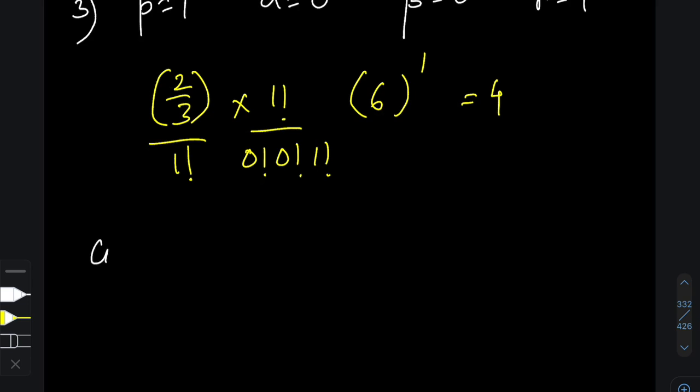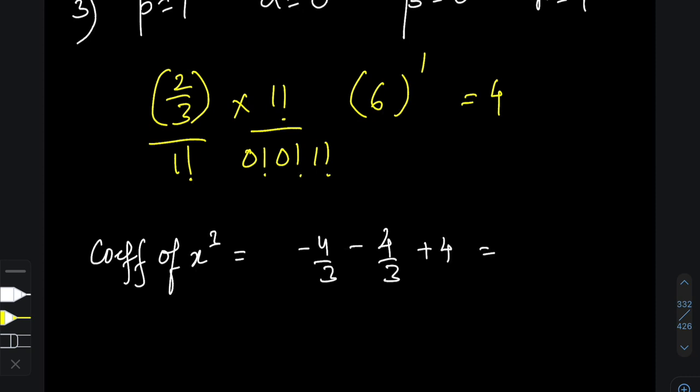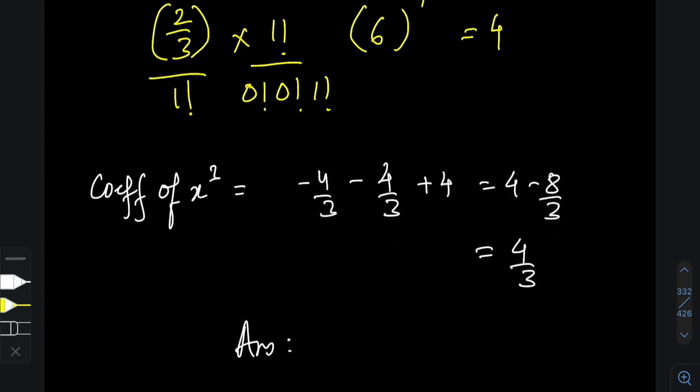Combining all three cases, the total coefficient of x³ is: −4/3 + (−4/3) + 4 = 4 − 8/3 = 4/3. So the coefficient of x³ in this expansion is 4/3. This question seemed easy but involved many concepts — the general term, fractional binomial expansion, and the multinomial expansion. Thanks for watching, stay safe and healthy!